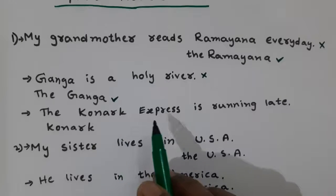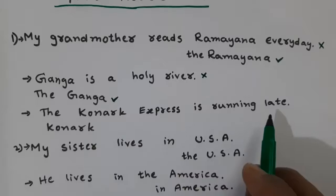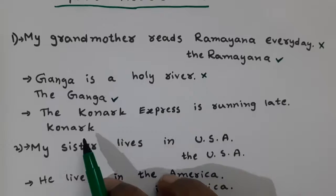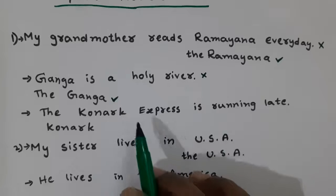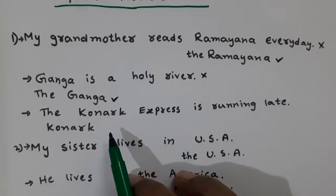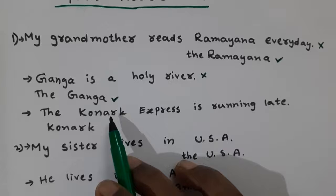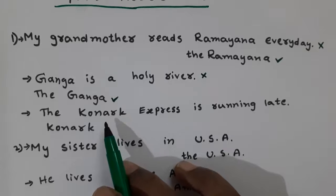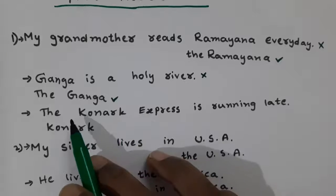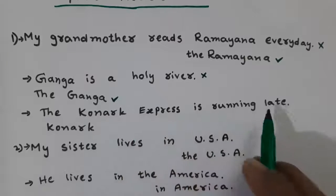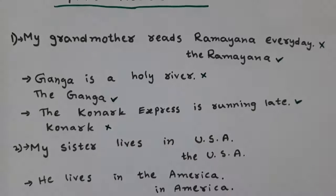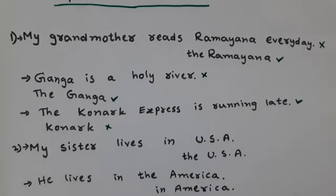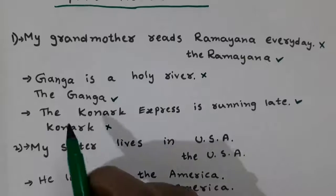Next: 'The Konark Express is running late' versus 'Konark Express is running late.' Which is correct? 'The Konark Express is running late' is correct. Before express trains, we use the definite article 'the'. That's why it is correct.